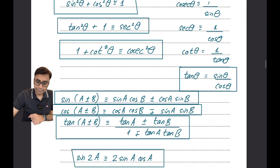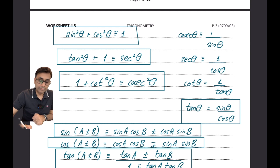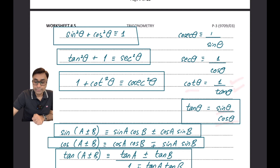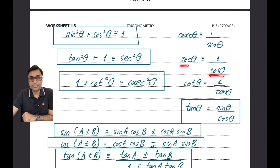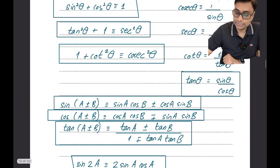We prefer to use sin and cos trigonometric ratios. If you have tan you can rewrite it as sin/cos. If you have cot you can rewrite it as 1/tan or cos/sin. Sec can be replaced as 1/cos. Not all the time it works, but most of the time it really helps to write trigonometric ratios in terms of sin and cos.